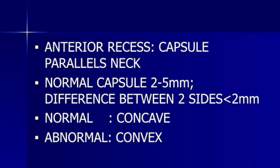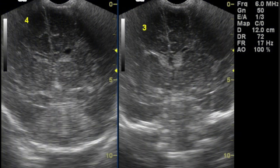Always compare the two sides in musculoskeletal cases. Use an anterior oblique plane. The anterior recess capsule parallels the femoral neck; the normal capsule thickness is about two to five millimeters, and the difference between the two sides is less than two millimeters. If the capsule is thickened beyond five millimeters or the difference between sides is greater than two millimeters, that is abnormal. The normal capsule appearance is concave and parallel to the neck; if it is convex, that is abnormal. The transducer should be placed slightly oblique to the shaft of the femur to obtain a perfect section of the anterior recess of the hip joint.